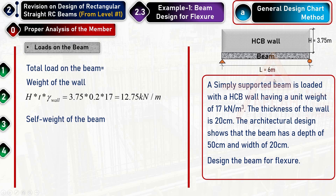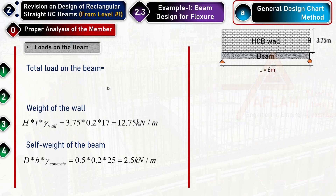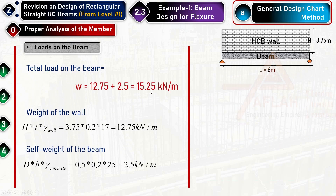The self-weight of the beam is calculated as depth × width × unit weight of reinforced concrete (25 kN/m³), giving 2.5 kilonewton per meter. Adding the self-weight and the wall load gives a total unfactored load of 15.25 kilonewton per meter.